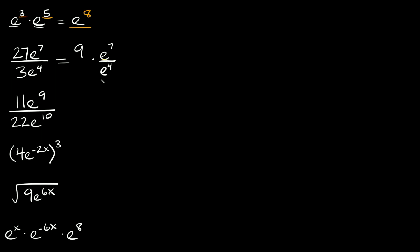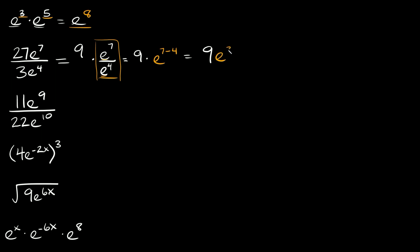Again we have the same base. When we're dividing we have to subtract exponents, and you always start with the one on top. So this portion right here is going to be equal to e to the seven minus four, and we're still multiplying by nine. So we have nine times e to the seven minus four, which equals nine times e raised to the third power — that's our answer.